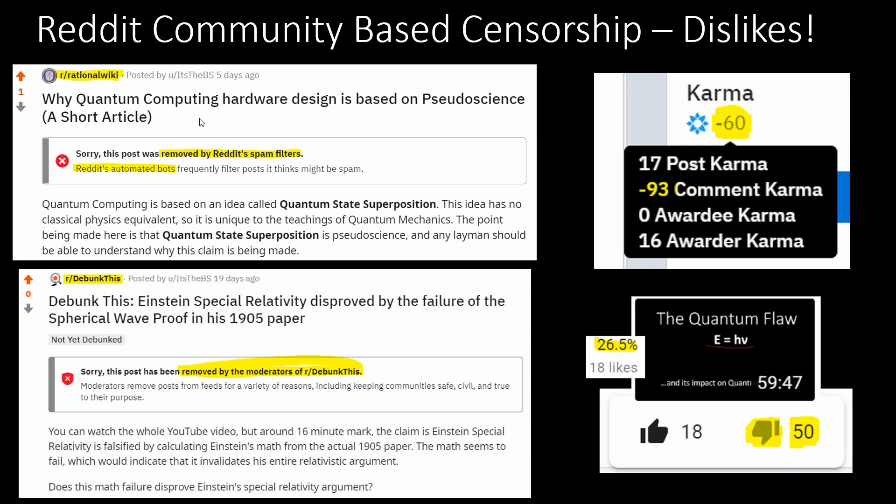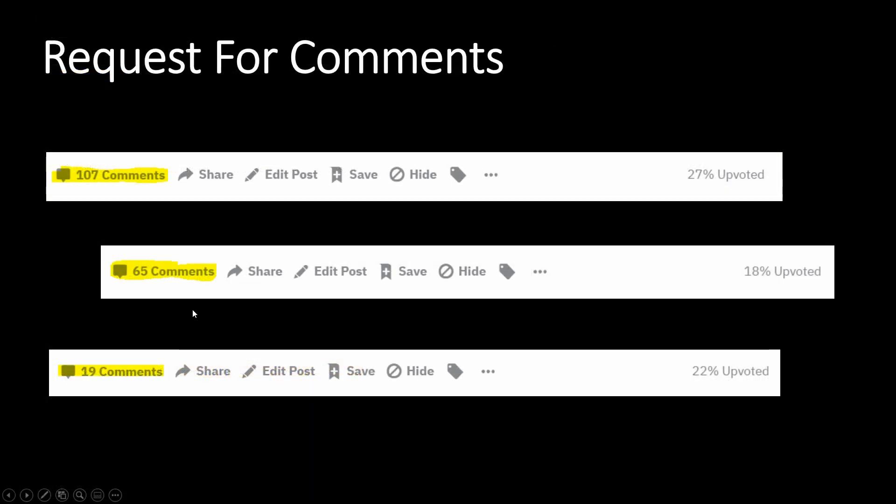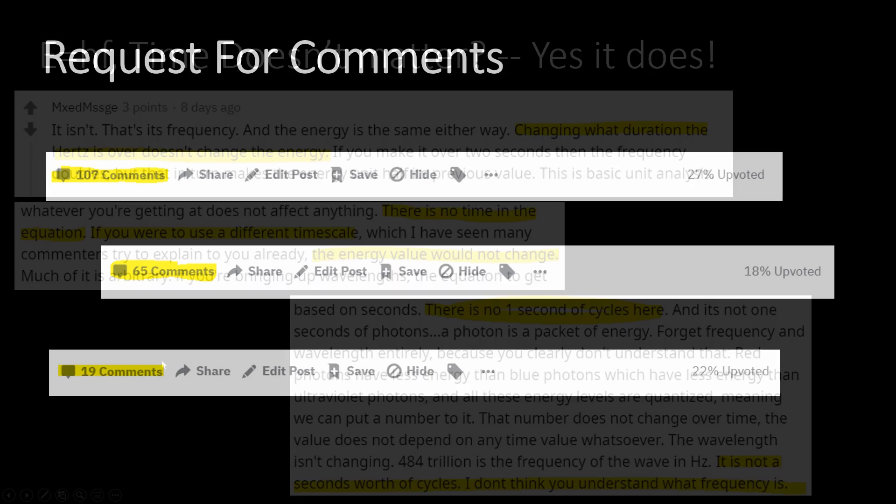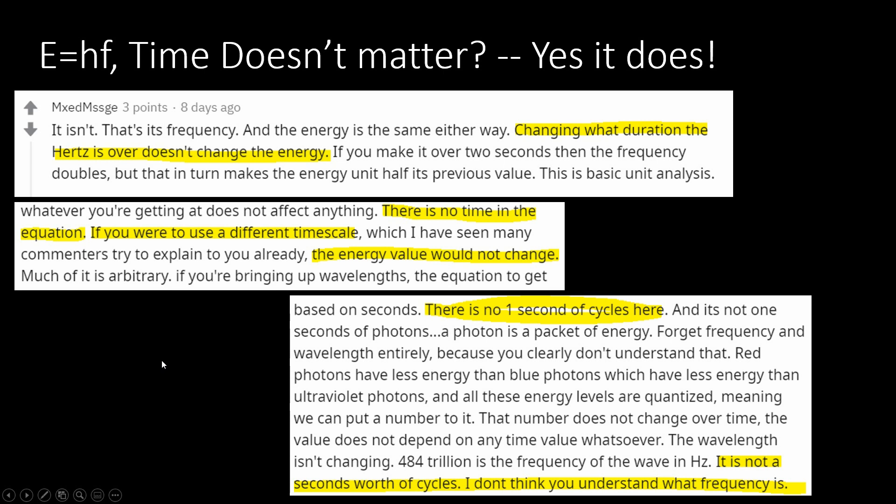And because my posts legitimately go against the mainstream, many of my comments get downvoted, and I can't even post in these communities anymore. But at least I have been able to gather up two common examples from the opposing viewpoint of how I am wrong, and that's what we're going to look at in this video.